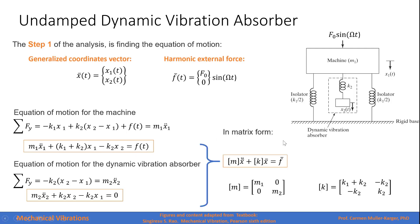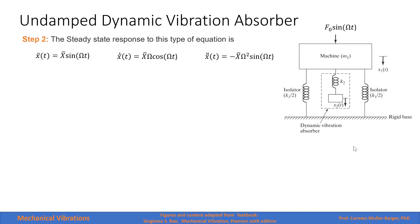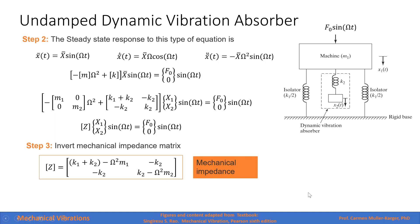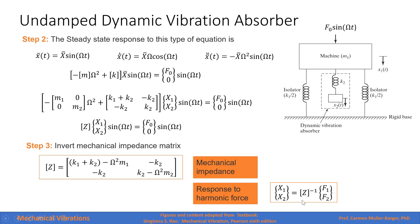We can write our equations with all variables — acceleration and position — on the left side of the equation and forces on the right side. We can write our equation in matrix form: we have a diagonal mass matrix and a stiffness matrix. The response to a harmonic force is a harmonic function with the same frequency. We derive this expression for the response and input it into our equation. This is what is called the mechanical impedance matrix.